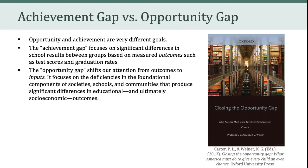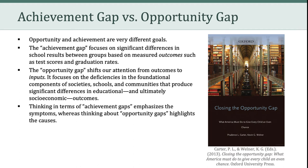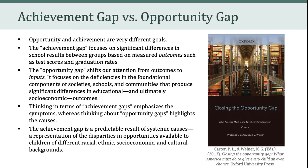In contrast, the opportunity gap shifts our attention from outcomes to inputs. It's not about what comes out of the education system, but what goes into it. The opportunity gap focuses on the deficiencies in the foundational components of societies, schools, and communities that produce significant differences in educational and ultimately socioeconomic outcomes. A convenient way to think about it: achievement gaps emphasize the symptoms, whereas opportunity gaps highlight the causes of those symptoms. Framing education this way reveals that the achievement gap is a predictable result of systemic causes — a representation of the disparities in opportunities available to children of different racial, ethnic, socioeconomic, and cultural backgrounds.